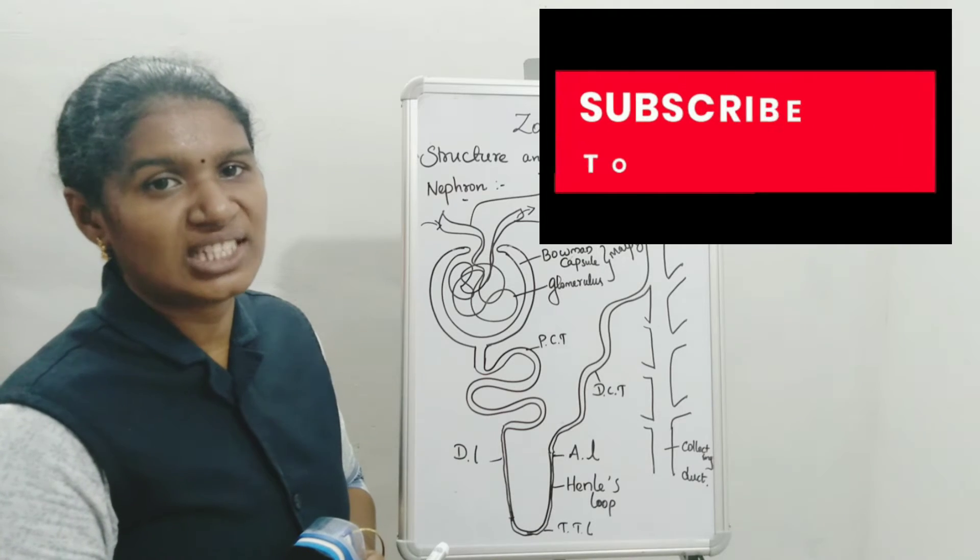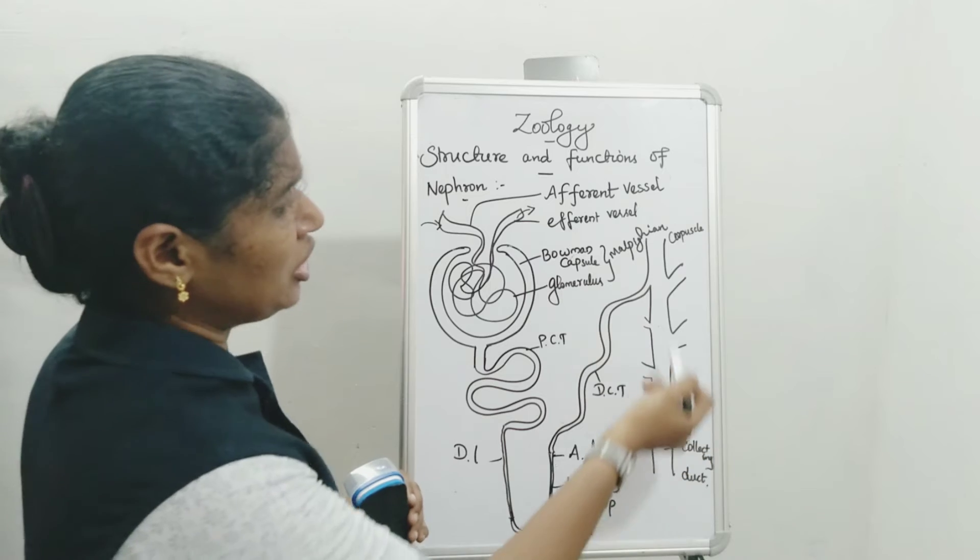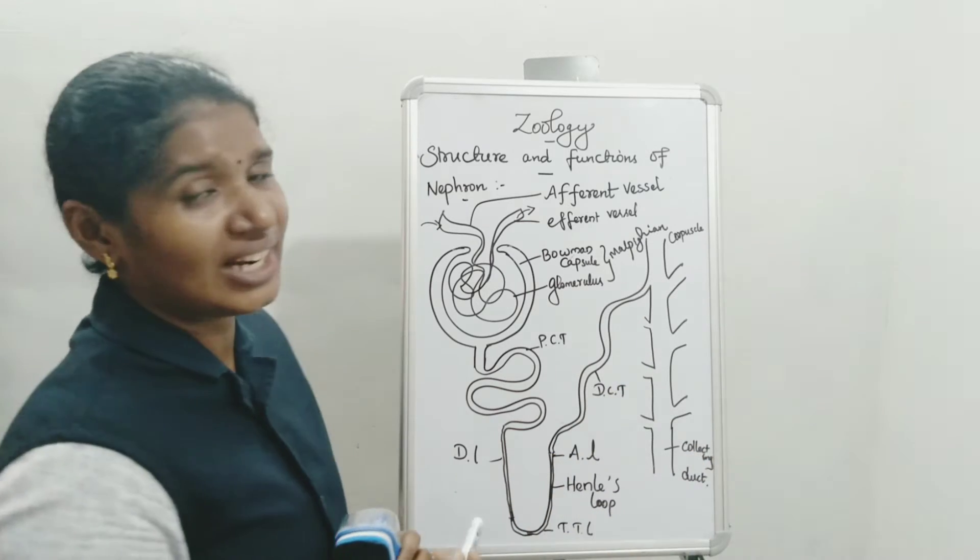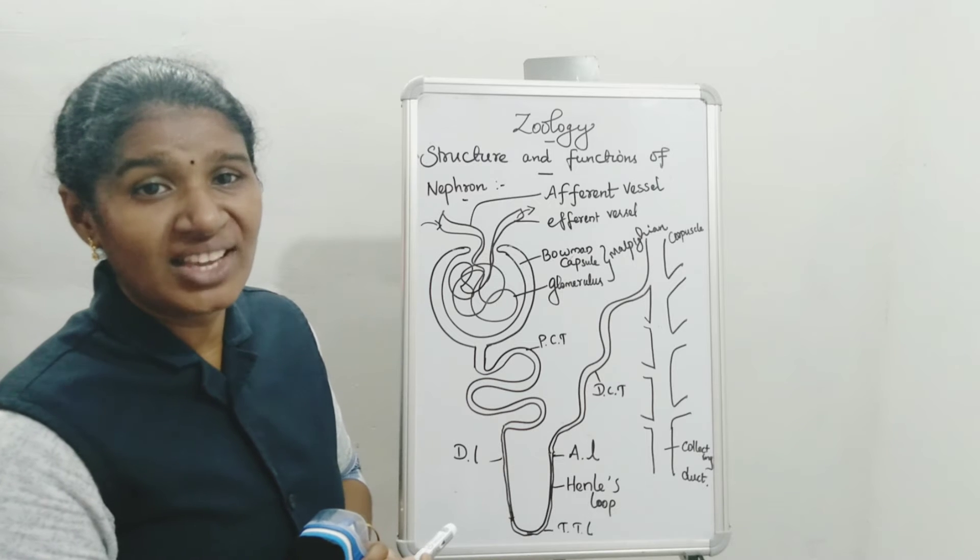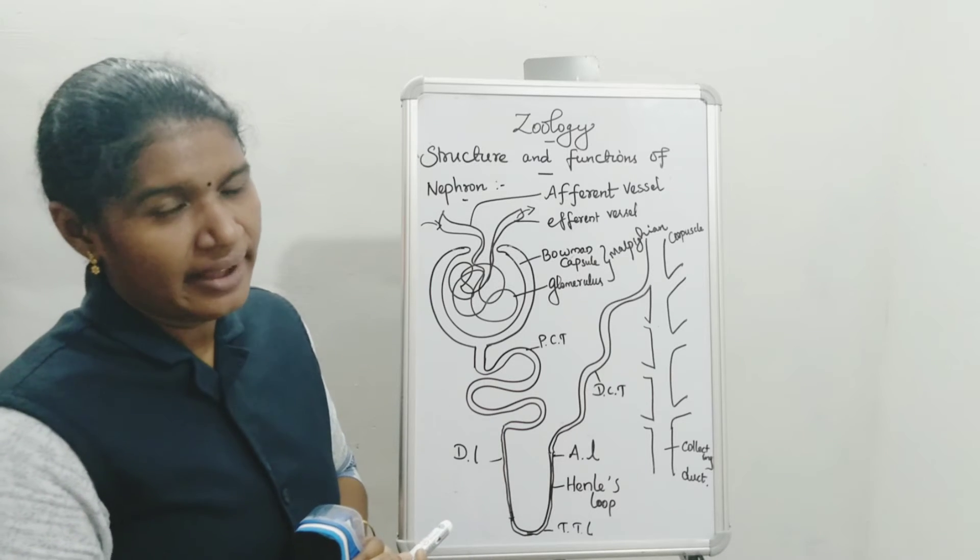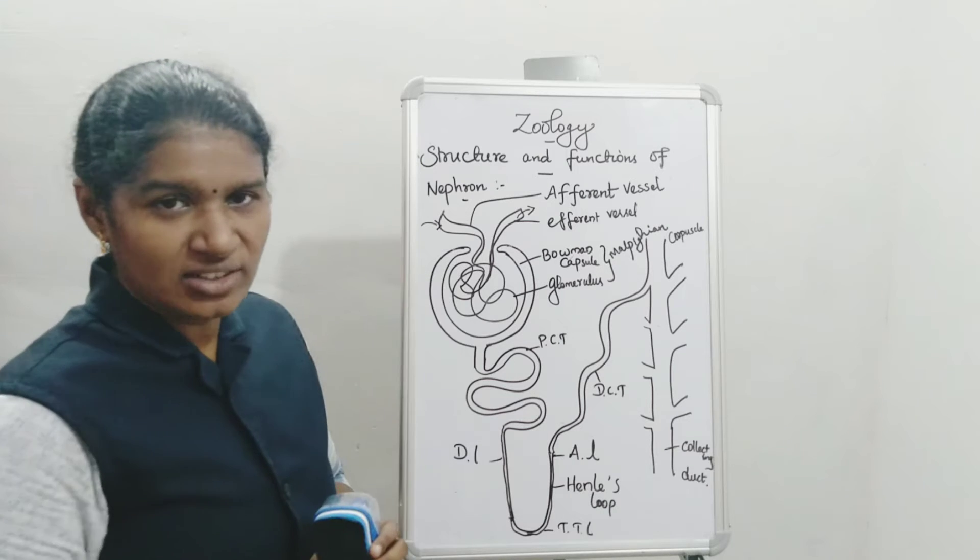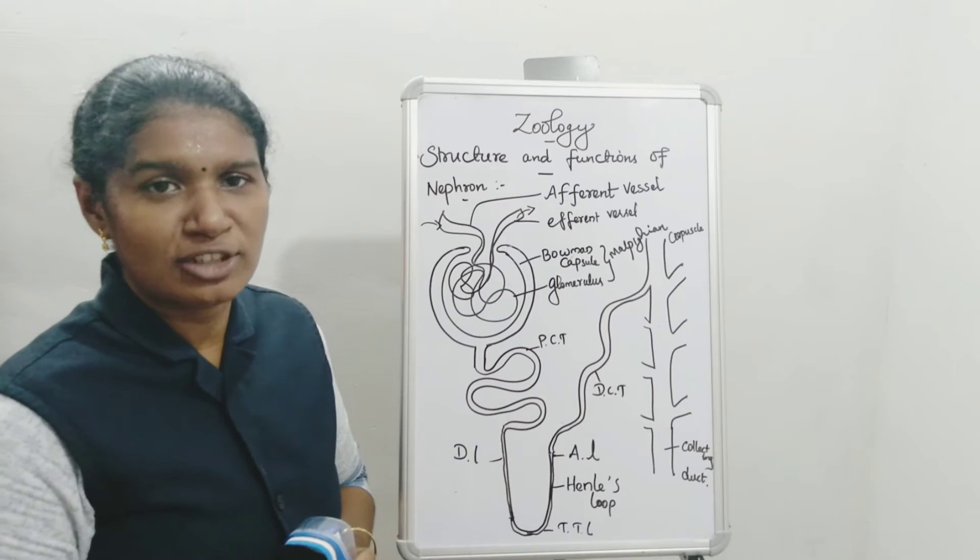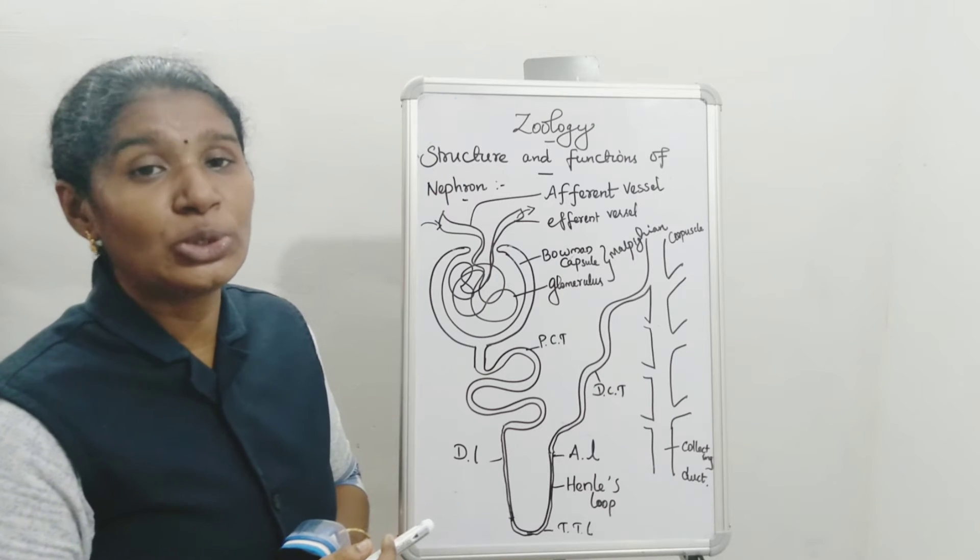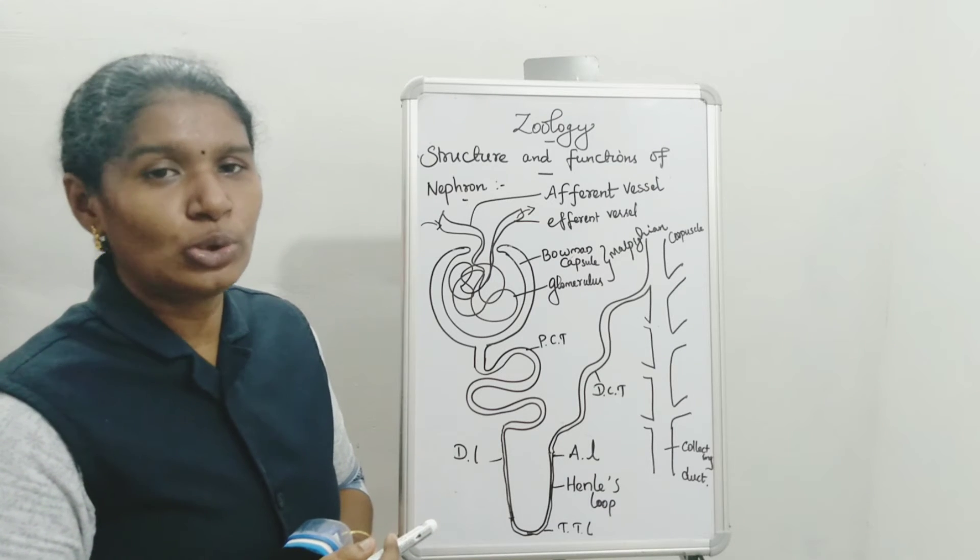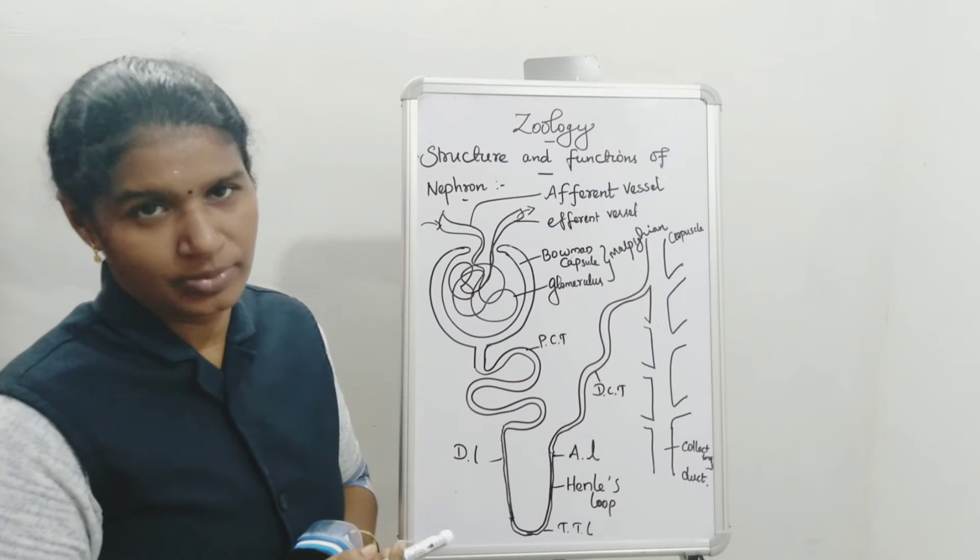The reabsorption process takes place. After, the urine is collected in the collecting duct. The collecting duct opens into the pelvic region of the kidney. The pelvic region opens into the ureter. Ureter opens into urinary bladder. After, it opens into urethra. So urethra sends out the waste matter out of the body.